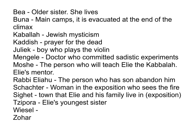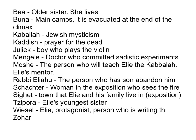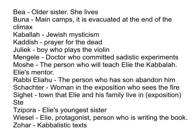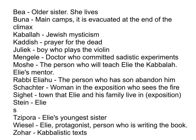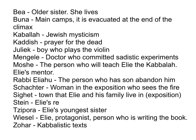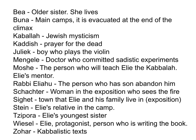And finally, Wiesel — obviously, Elie — is the main character, the protagonist, the person who is writing the book. You might also want to add narrator, things like that. And the Zohar are the Kabbalistic texts. Also, I just remembered I left a character off — Stein, who is Elie's relative in the camp. Those are the main characters you should know.